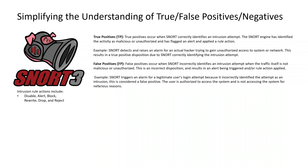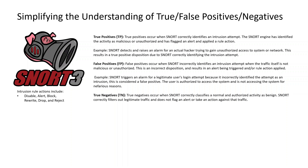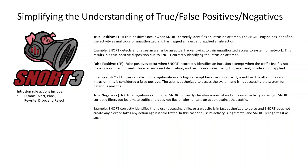True negatives occur when Snort correctly classifies a normal, authorized activity as benign. Snort correctly filters out legitimate traffic and does not flag an alert or take action. For example, Snort correctly identifies that a user accessing a file or website is authorized to do so and creates no alert — the user's activity is legitimate and Snort recognizes it as such.